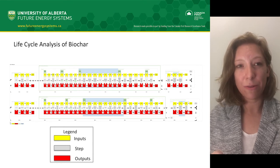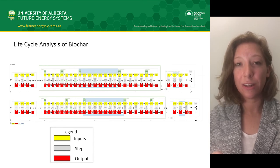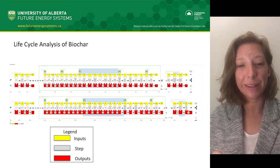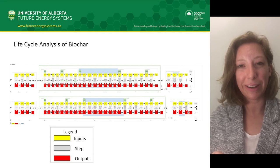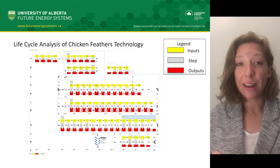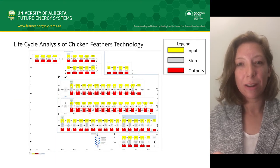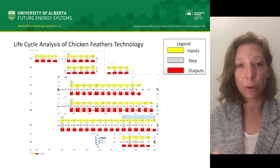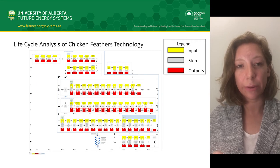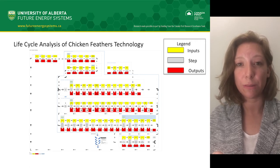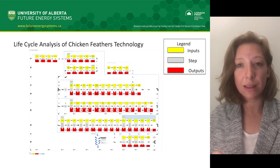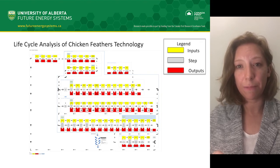This is what it looks like for one of the technologies — biochar — and as you can see here, there are many steps and it's quite complicated. If you look at this other novel technology based on chicken feathers, it's even more complicated. The life cycle analysis software can generate estimates of material usage and waste products based on an inputted version of these maps, and it's important to conduct these kinds of analyses so that we know the impacts of the technologies we're creating. That's our first major goal.